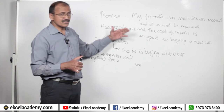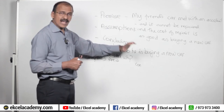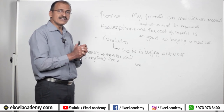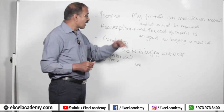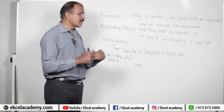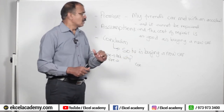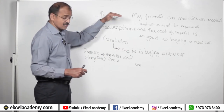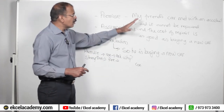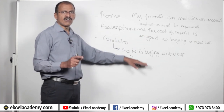Now, if somebody asks you to weaken the argument, the premise will be the same and the conclusion will be the same. But when they ask you to weaken the argument, unlike strengthening — where you believe this person makes good decisions — in this situation you have to believe that this person always makes horrible decisions. So this decision is also bad. How do you weaken this? We will change the sentence and put a different assumption to see whether this decision is good or bad.